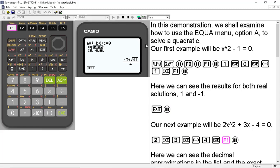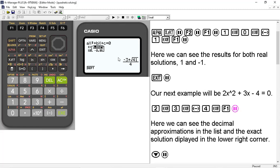And this brings us to this screen, where in the list here, we can see that we have decimal approximations to our answers. But in the lower right, we can see that we have the exact answer as given by the quadratic formula.